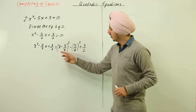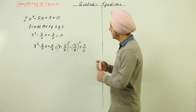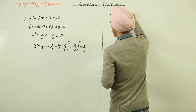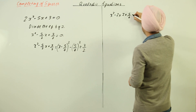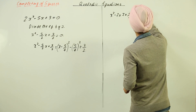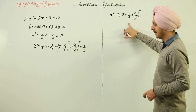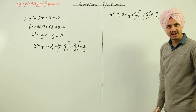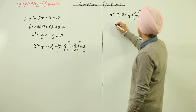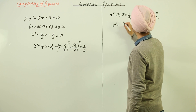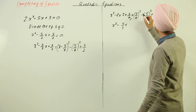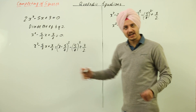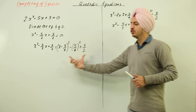If you expand this bracket, it becomes x² minus 2·x·(5/4) plus (5/4)², correct. This bracket also has minus (5/4)² plus 3/2. So the two (5/4)² terms cancel, and we are left with x² minus 5/2 x plus 3/2, which confirms this equals the original equation.